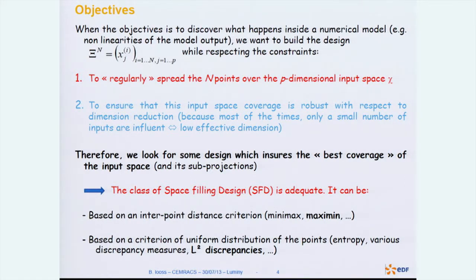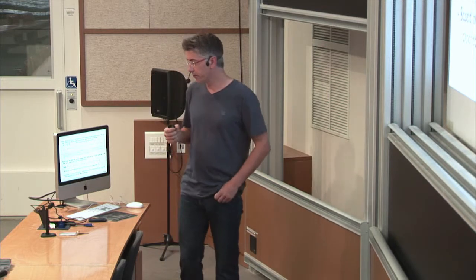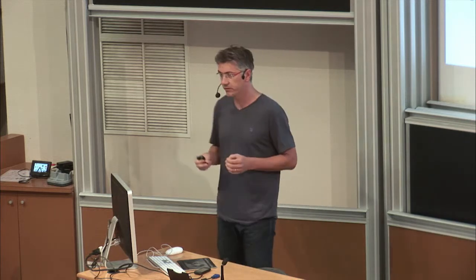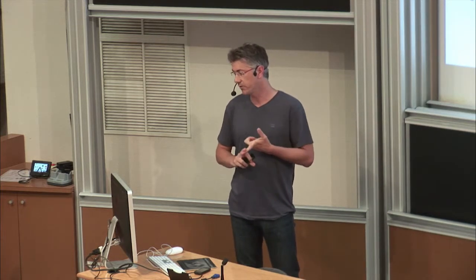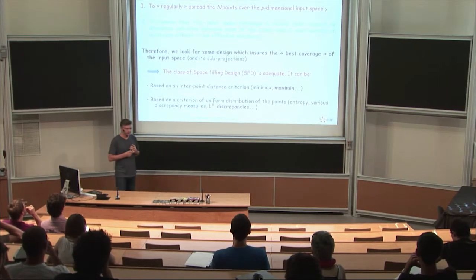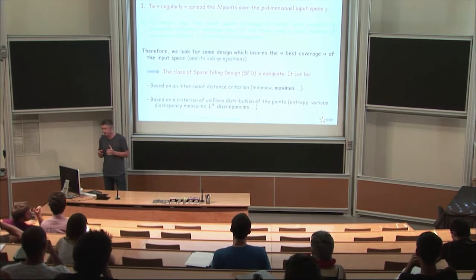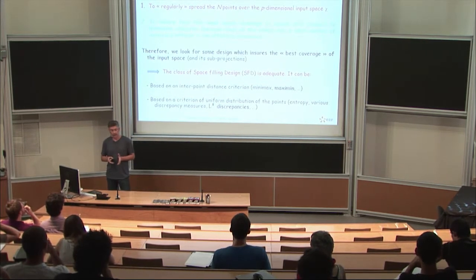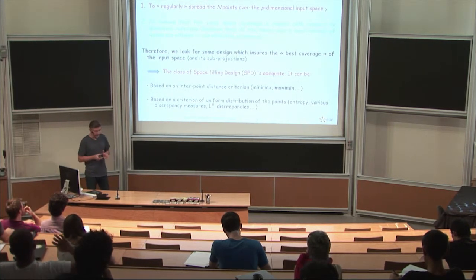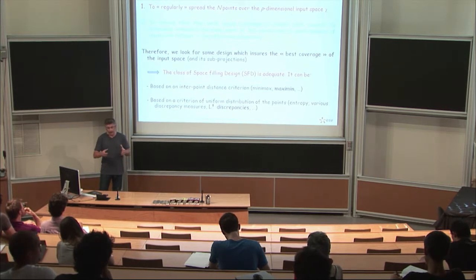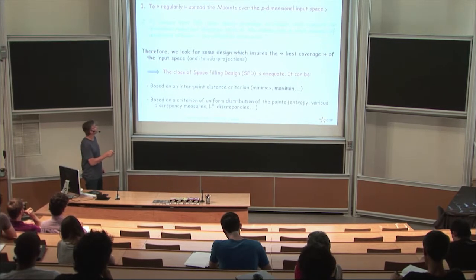Mathematically, the problem is to build a design of N points in dimension P with two constraints. First, we want to regularly spread the endpoints on the P-dimensional input space. Second, an important goal is to ensure that this input space coverage is robust with respect to dimension reductions. This is important because most of the time only a small number of inputs are active inside the numerical code, and we don't know a priori which these inputs are.